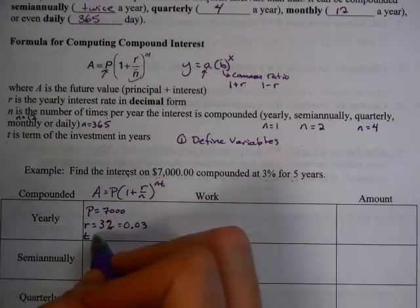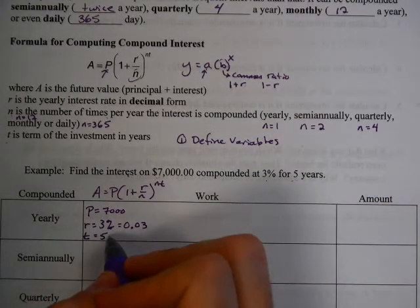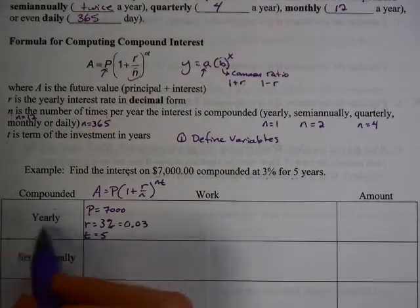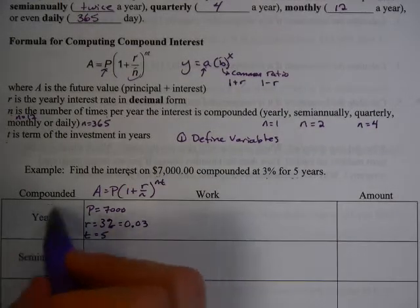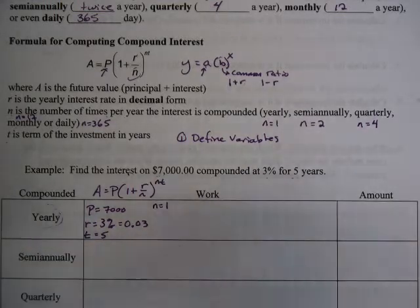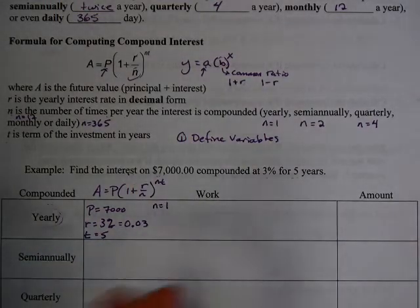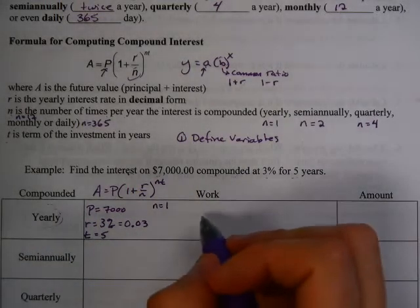T is, we're going to do this for 5 years. Now, this particular box wants us to compound this yearly. That means n is going to be 1, because it will be compounded one time in a year.